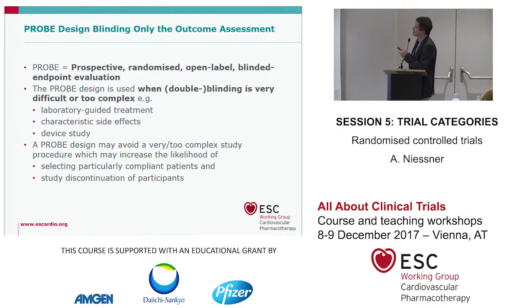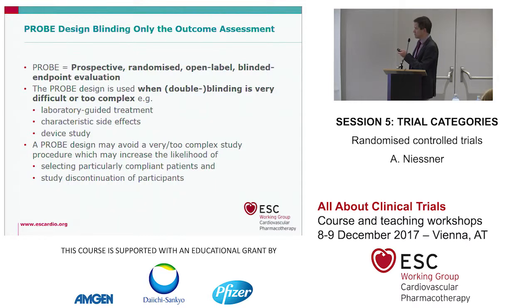Another specific design is the PROBE design — Prospective, Randomized, Open-label, Blinded Endpoint evaluation. It's used when double blinding is very difficult or too complex, for example when you have laboratory-guided treatment like anticoagulation, characteristic side effects, or device studies. The PROBE design may be preferable to avoid overly complex procedures, which could increase selection of particularly compliant patients and study discontinuation.